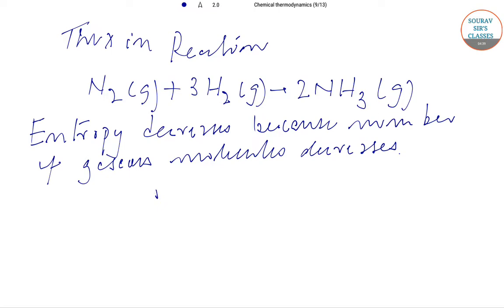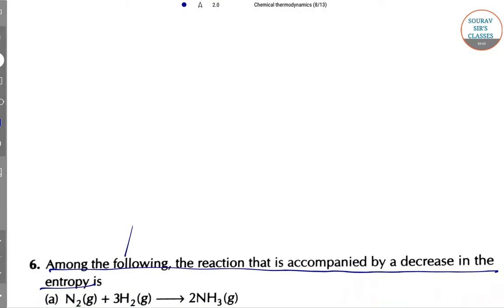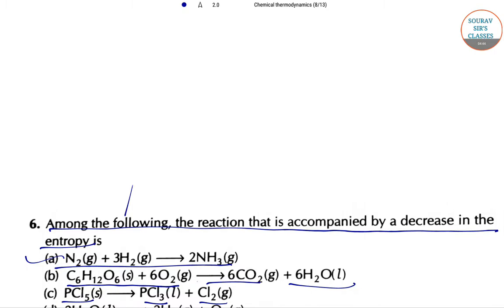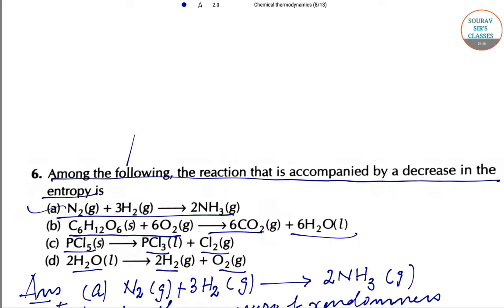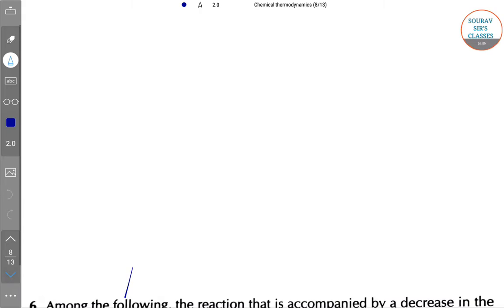So that's why option A, that is N2 plus 3H2, is the reaction accompanied by a decrease in entropy. Now let's go ahead to another question.